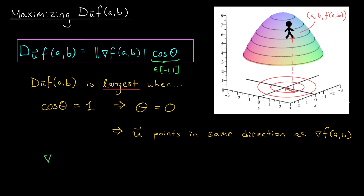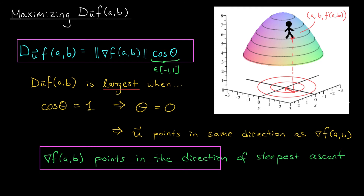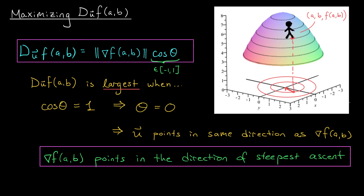This is our first and most important property about the gradient vector. At any point ab, the gradient vector del f at ab points in the direction of greatest ascent — it tells Jose the direction to move to increase his altitude most rapidly. And now we understand that weird behavior from our earlier examples. The downward opening paraboloid had a peak at the origin, so the gradients pointed toward it. The cone had a minimum at the origin, so the gradients pointed away, indicating you can increase altitude by moving away from the origin.